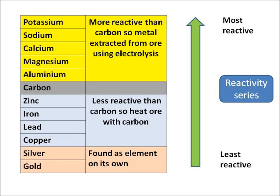What about those elements like zinc and iron and lead and copper? They're less reactive than carbon, so we've got a choice. We can either use electrolysis or we can react them with carbon — we heat their ore with carbon. The better option is to react them with carbon because it uses less energy. So something like iron oxide, I'll heat it with carbon and that will form iron and carbon dioxide.